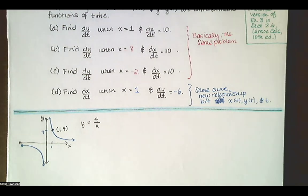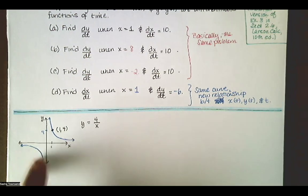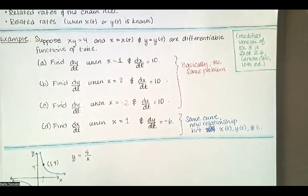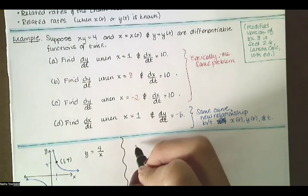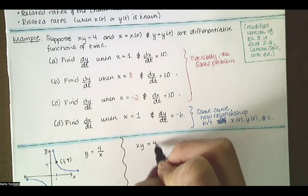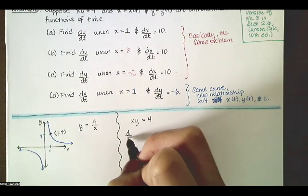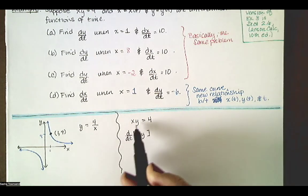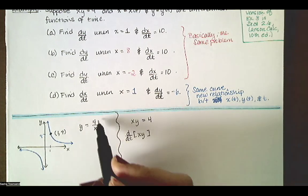The question becomes: how do you find dy/dt? There are several different ways to look at it. First, we'll use implicit differentiation. We know that x times y equals 4, and we know that x and y both depend on time, so we differentiate both sides implicitly with respect to t. We're imagining that as time changes, our x and y values change, but we are constrained — x times y has to equal 4, so we stay on this curve.